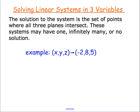Today we're going to be talking about solving linear systems with three variables, instead of the two that we were solving earlier in the chapter. The solution to the system is a set of points where three planes are going to intersect, because you're talking about three dimensions. These solutions can have one, infinitely many, or no solution, and this is called an ordered triple.